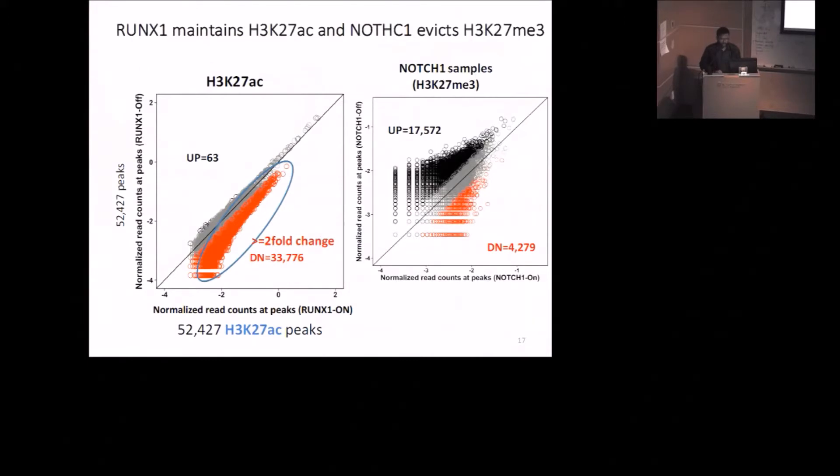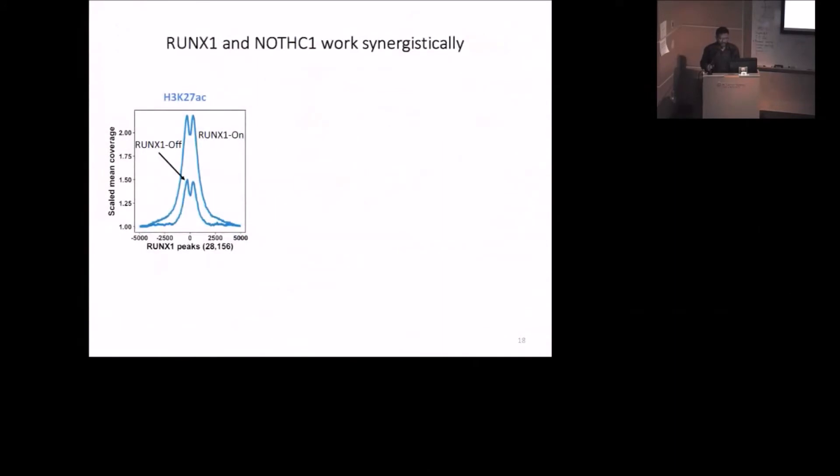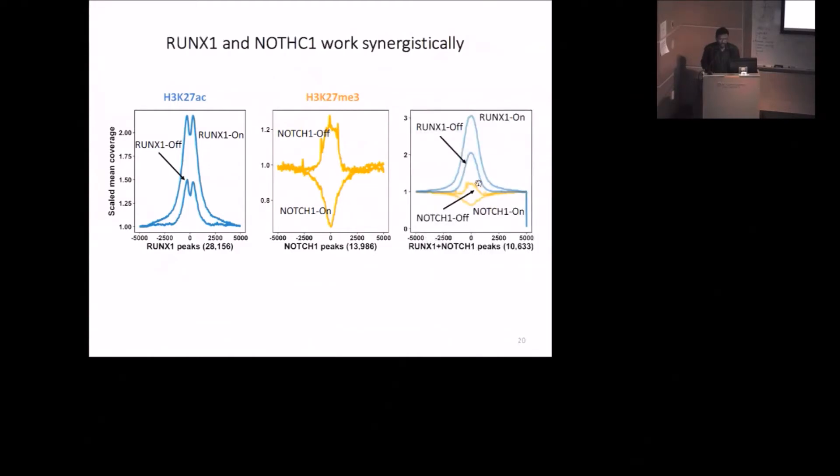To look at the genome-wide level, I looked at all the RUNX1 binding sites and the enrichment of H3K27 acetylation mark. We found that when we knock down RUNX1 gene, there is significant loss of acetylation level at the RUNX1 binding site. Then I looked at the NOTCH1 binding sites. In the control sample, when NOTCH1 is highly expressed, it removes the 27 trimethylation mark. When we knock down NOTCH1 gene, this region dynamically gains 27 trimethylation. When both RUNX1 and NOTCH1 are present at these regions, we have seen the similar pattern. This data is suggesting that both work synergistically.